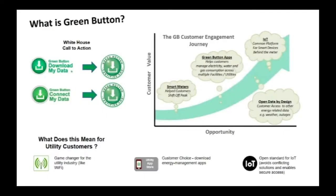As you'll see from this first slide, the Green Button is a journey. It is not only a White House call to action to provide energy information to consumers, but a journey that now includes natural gas and water, so utilities that provide those can also share data in the Green Button format. We like to call this a game changer for the utility industry — like Wi-Fi was for homes — enabling access to outside information without having to install anything new inside the home.